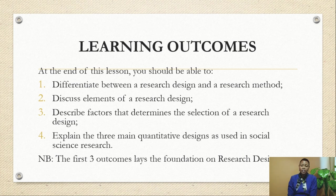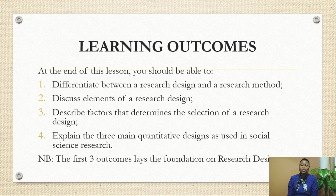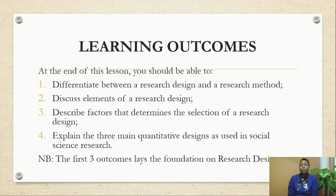At the end of this lesson, you should be able to: 1. Differentiate between a research design and a research method. 2. Discuss elements of a research design. 3. Describe factors that determine the selection of a research design. 4. Explain the three main quantitative designs. Please note that the first three outcomes are laying the foundation on research designs, meaning they are also applicable in qualitative research.